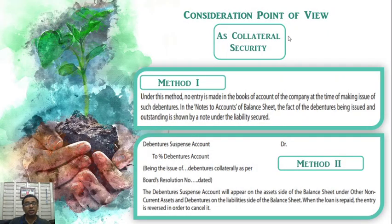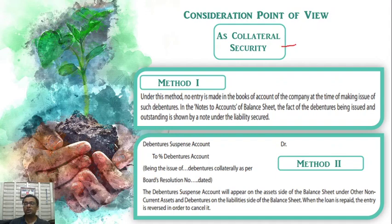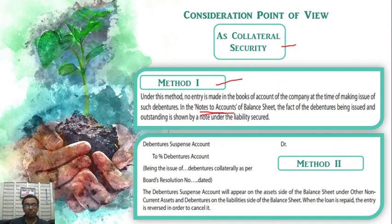For the third type — collateral security — if you have a loan, you depend on your account. You cannot consider it in the form of cash or other than cash. Collateral security is used to fund a loan in order to provide account security. The accounting treatment is to enter the balance sheet in the notes to account.